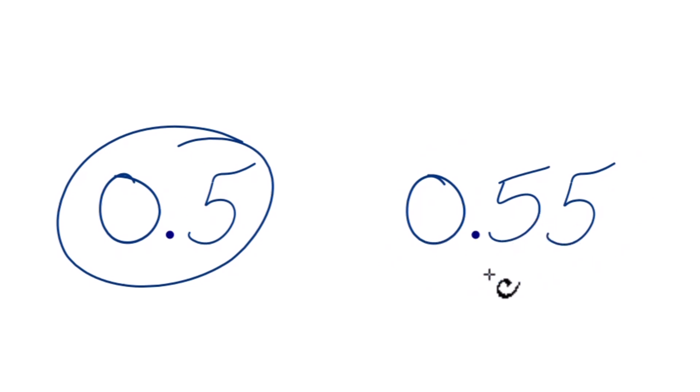What we're going to do is look at the first number after the decimal point. That first number is the tenths place. So here we have 5. Over here, for 0.55, we have 5. So those are the same.